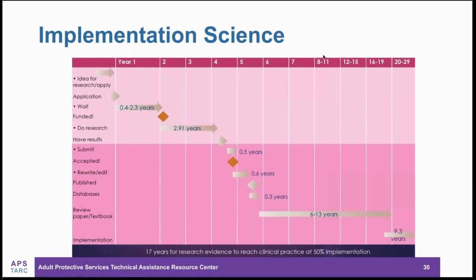This graphic shows how long it takes for research to reach the change of practice, from implementation science. It takes about 17 years from the inception of a research idea all the way to the change in practice — and what's not on this graphic is the funding. I don't think we can wait 15 to 20 years to have APS get additional funding. Currently we don't have dedicated federal funding. What we need to do is start gathering data through the evaluation process and get feedback to the federal government as soon as possible to establish that argument that APS needs and deserves additional dollars.